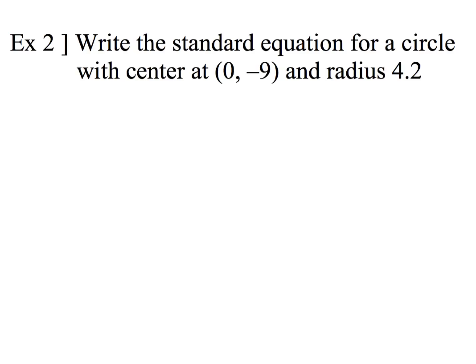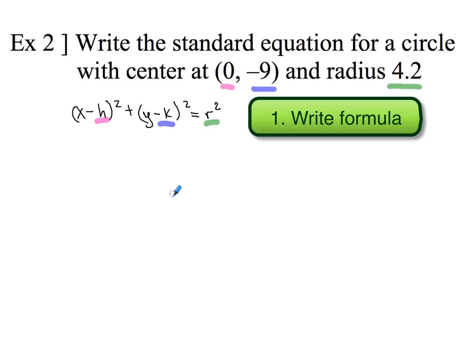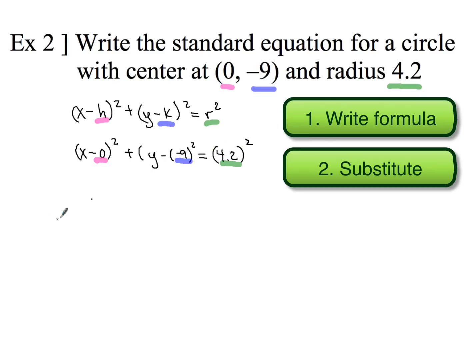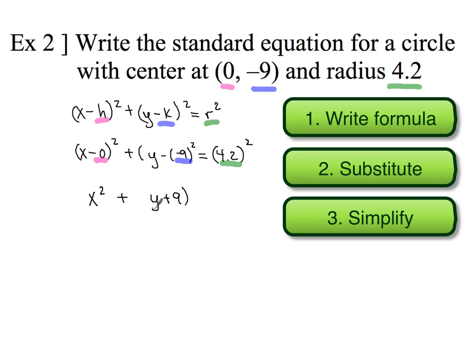But what if we were just given the information and we weren't given a picture? So with this, again, we'll start by writing down our formula. Now, the next thing I want you to do is go ahead and just take your time. Substitute everything in. So we're going to have (x - 0)² plus (y - (-9))² equals (4.2)². Now, simplifying this whole piece, we're going to have just x² plus, and then here, y + 9, because you're not going to have a double negative. So we'll write that as (y + 9)². That quantity squared equals, then when you square 4.2, you end up with 17.64. So that is the standard equation for this circle that has a center at (0, -9) and a radius of 4.2. That's it.